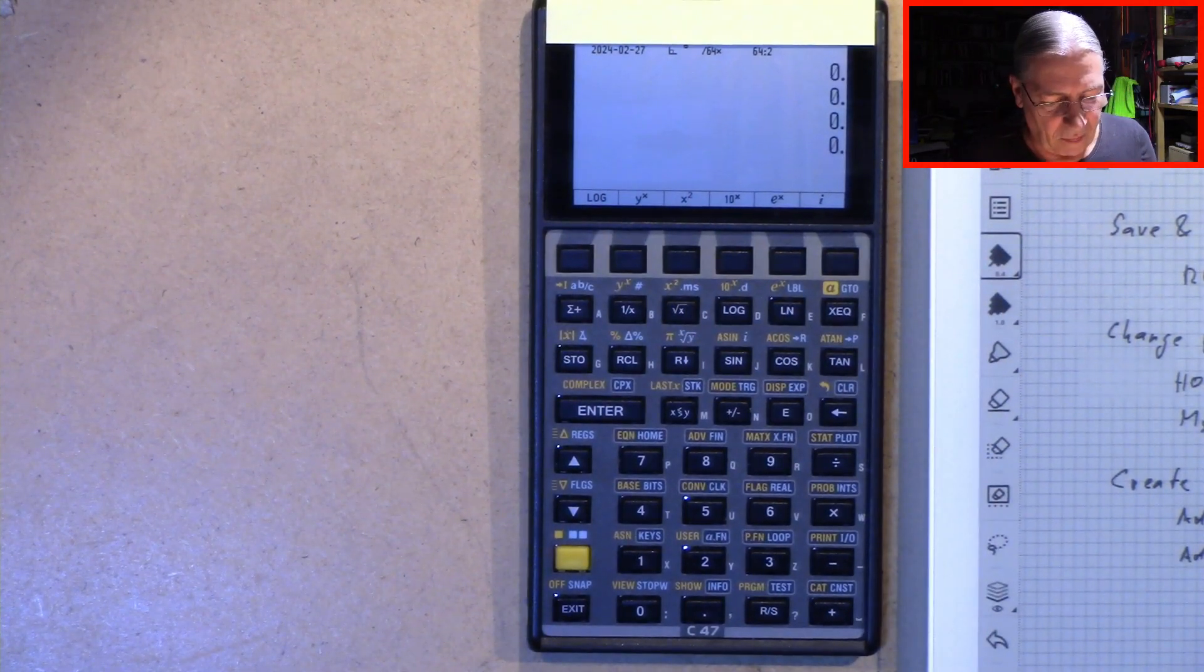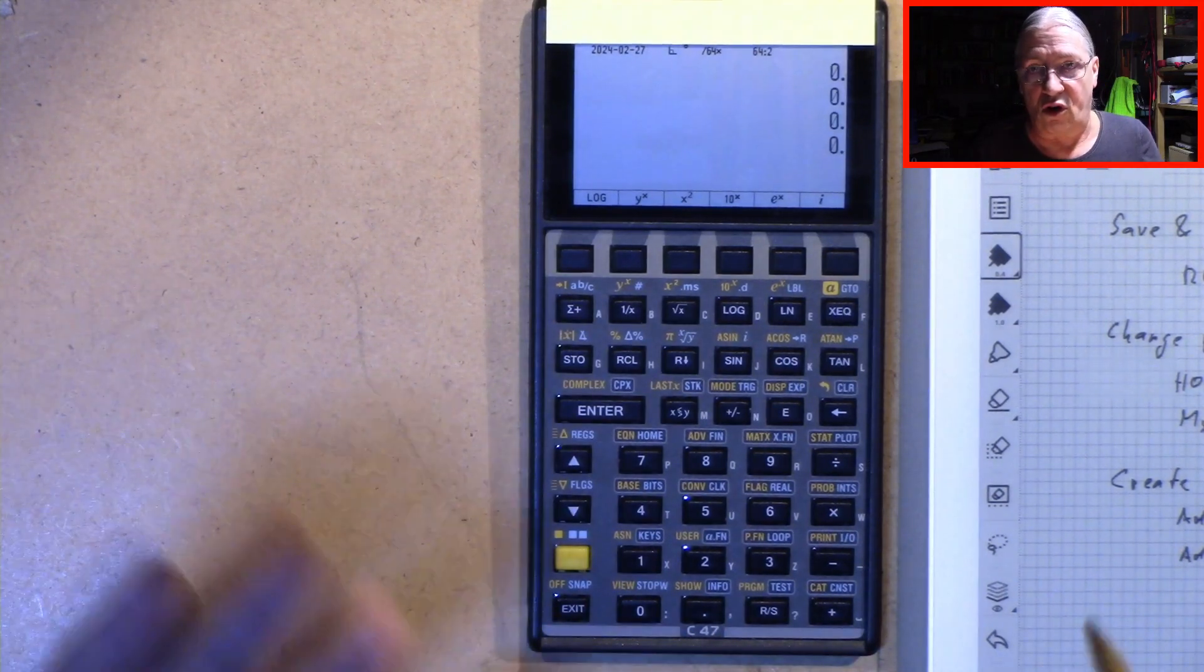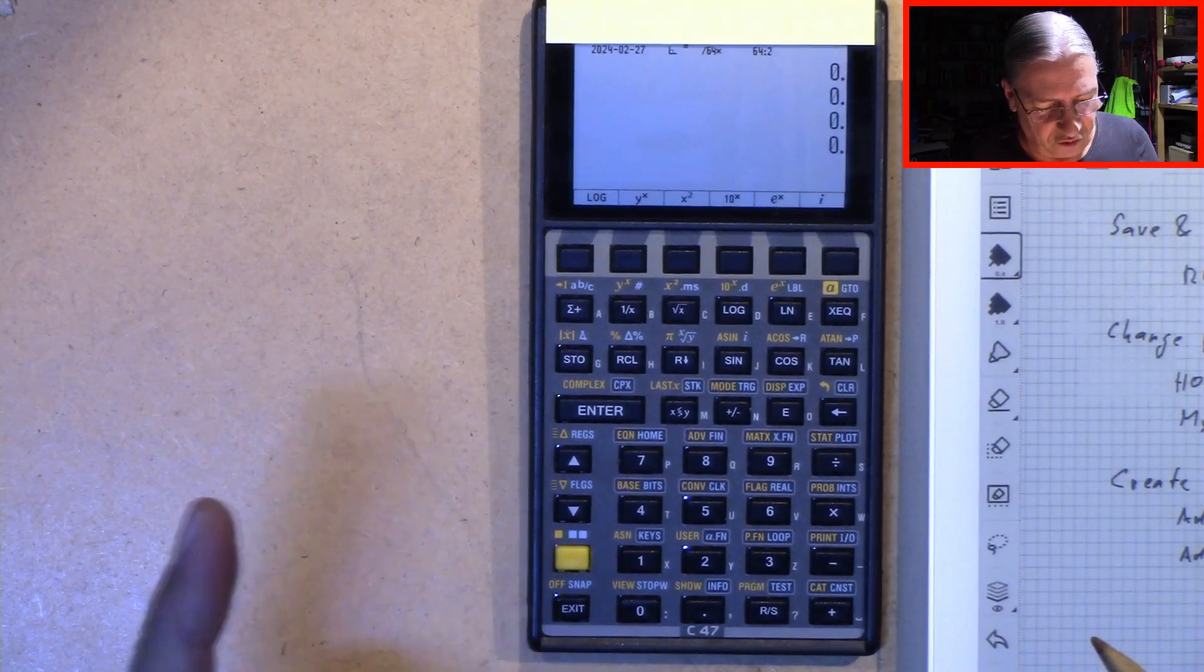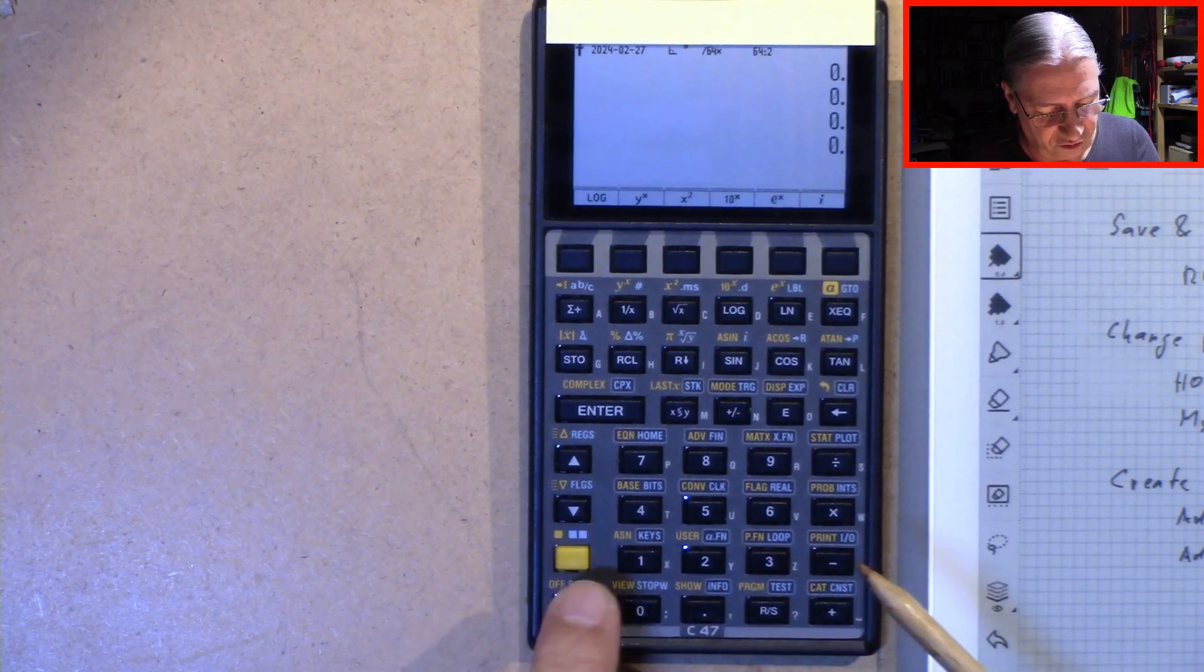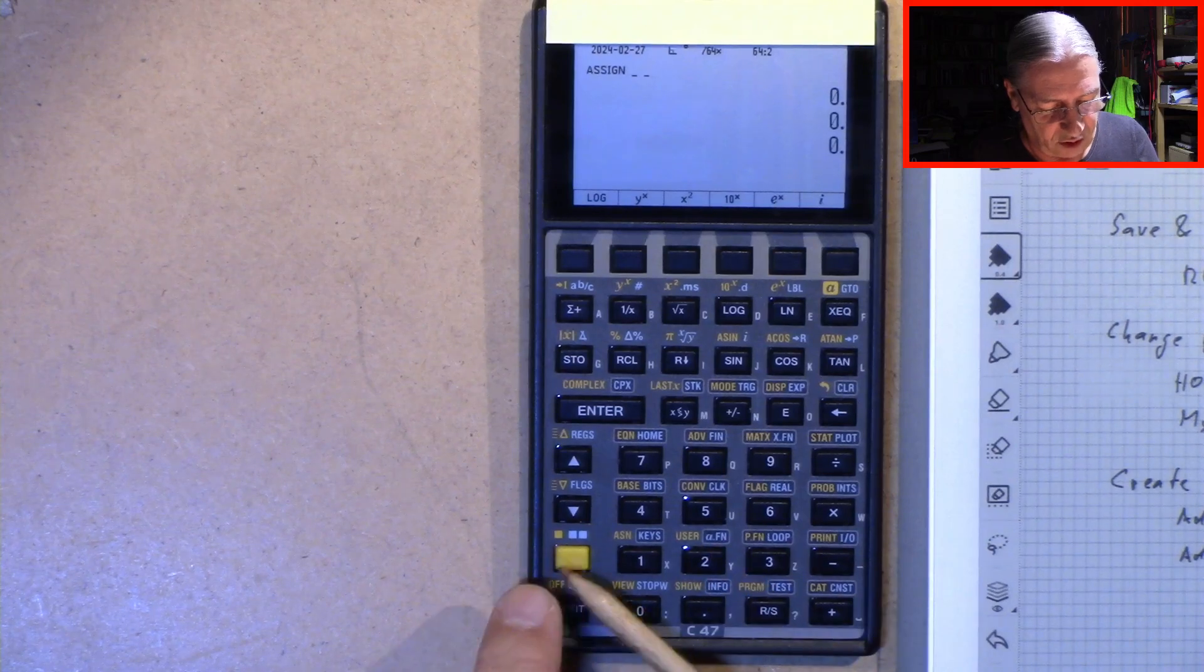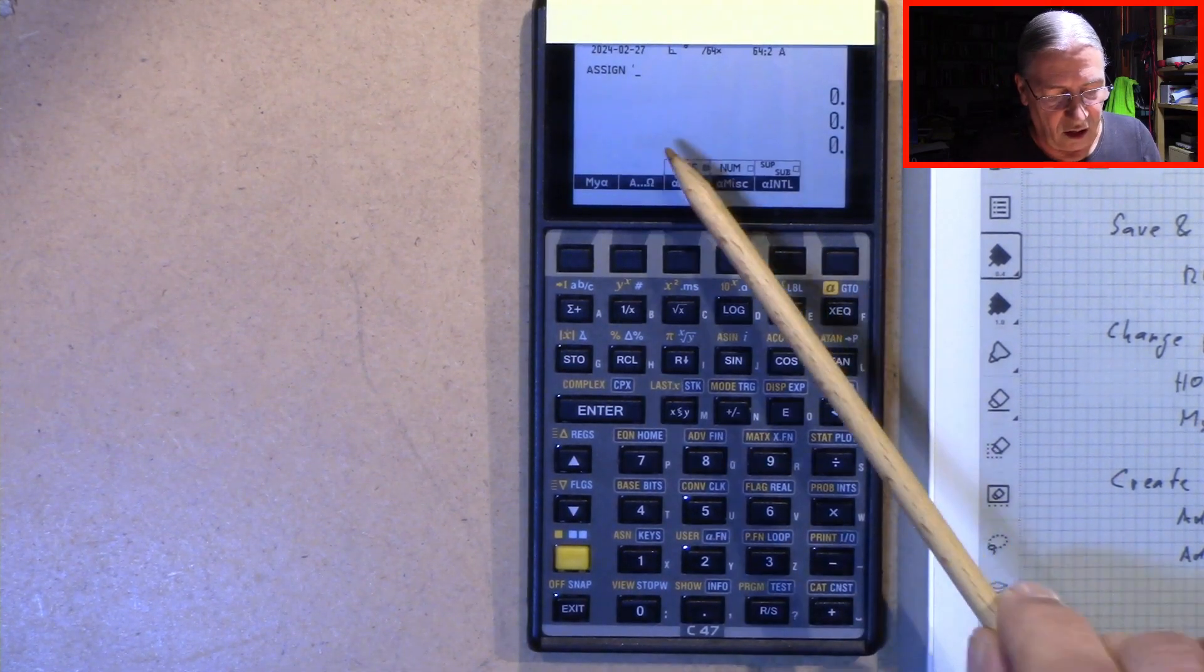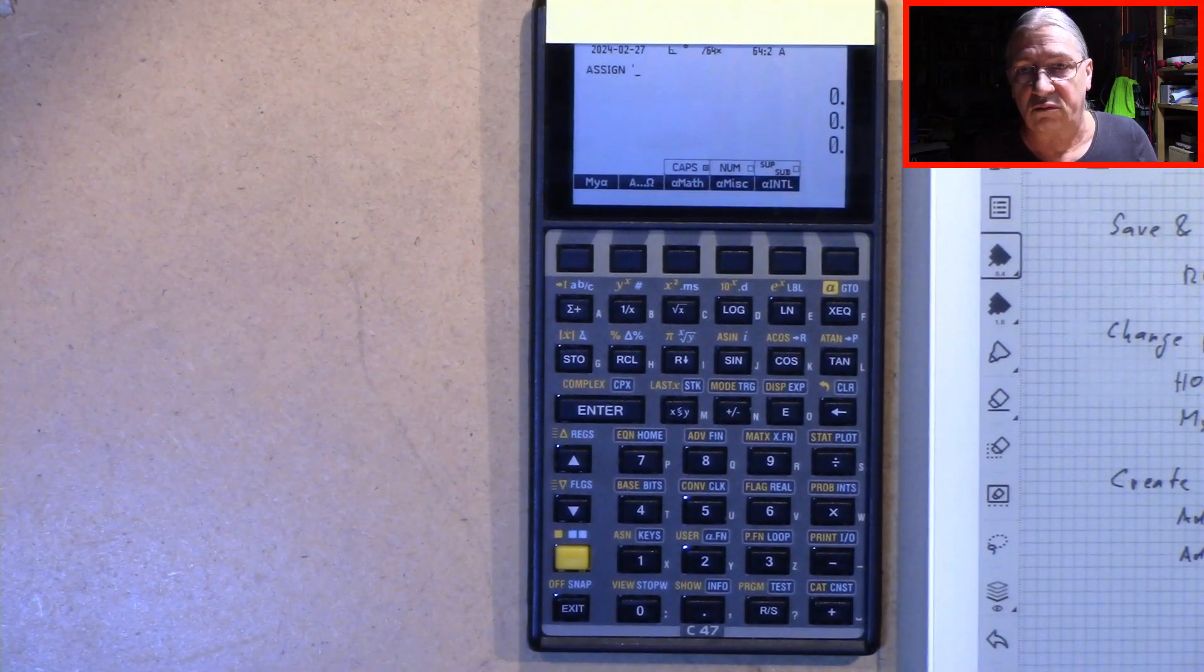Next, let's assume you want a menu of your own, a brand new one. Then you do the following. You press shift, assign, and then user. So again, shift, user. And now you can enter a name for your brand new menu.